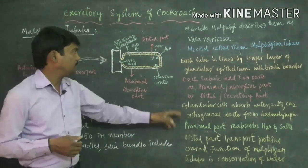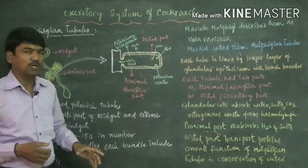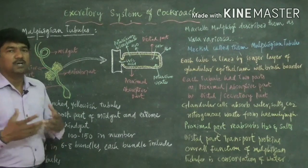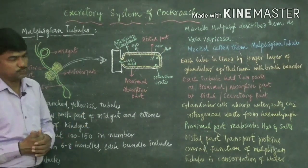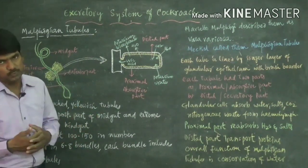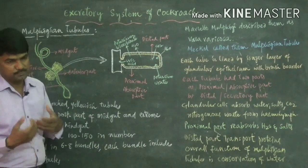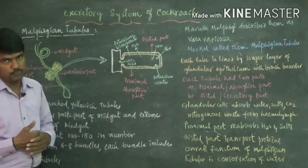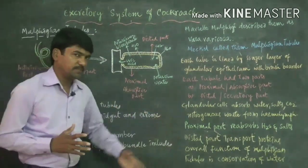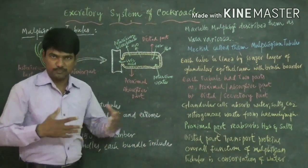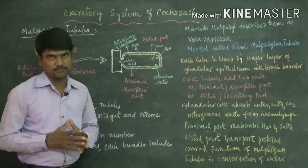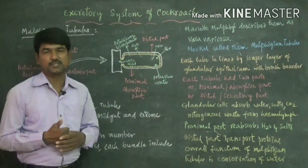The proximal part of the Malpighian tubules absorbs water and salts from the haemoleum, whereas the distal part transports proteins towards various parts of the body. Malpighian tubules also participate in water conservation, preventing water loss from the body.